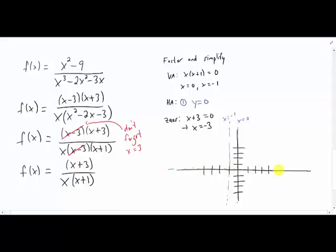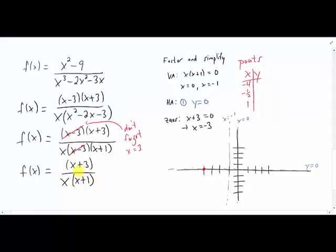For the horizontal asymptote, notice that the degree of our denominator is bigger than the degree of the numerator — that's our first rule — and we decided that gives us y equals zero. For zeros, we're setting the numerator equal to zero and we get a zero of x equals negative three. I have a zero of this function right here at x equals negative three. I'm going to pick an x value from each region in between all of our zeros and vertical asymptotes — x equals negative four, x equals negative one-half to squeeze in between the two vertical asymptotes, and x equals one.